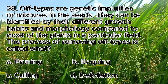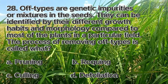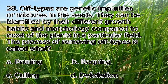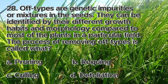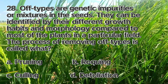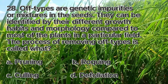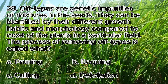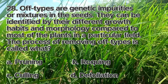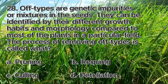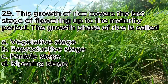Number 28. Off-types are genetic impurities or mixtures in the seeds. They can be identified by their different growth habits and morphology compared to most of the plants in a particular field. The process of removing off-types is called what? A. Pruning, B. Roguing, C. Culling, D. Defoliation. The answer is letter B, roguing.